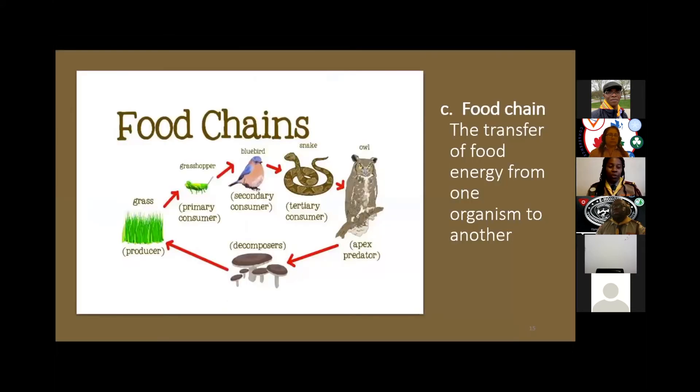Food chain: the transfer of food energy from one organism to another. For example, grass is consumed by the grasshopper who is consumed by the bluebird who is consumed by the snake who is consumed by an owl who on death is consumed by fungi, which returns to the grass and then the cycle continues. Removing any of the organisms in the chain will cause an imbalance that may affect all of the other organisms.